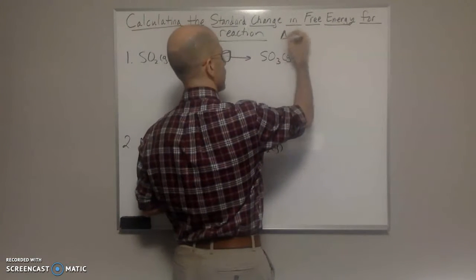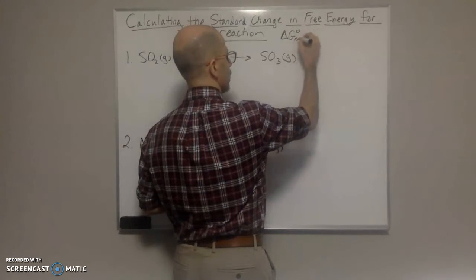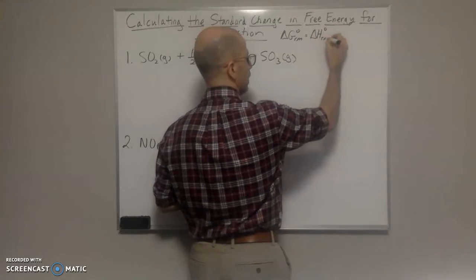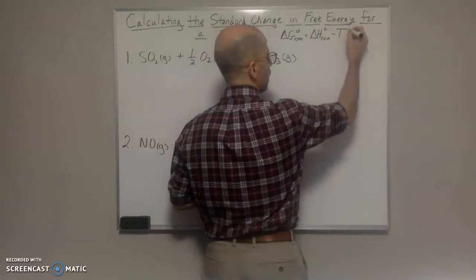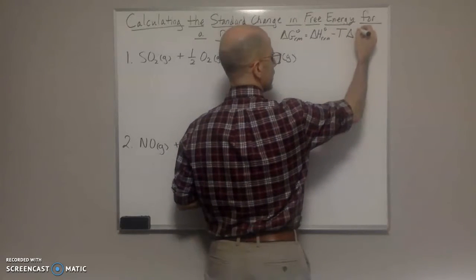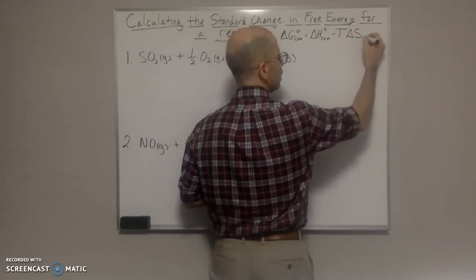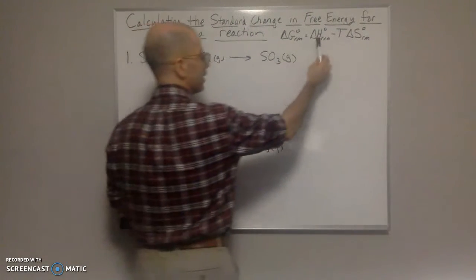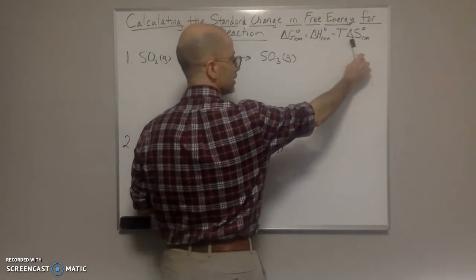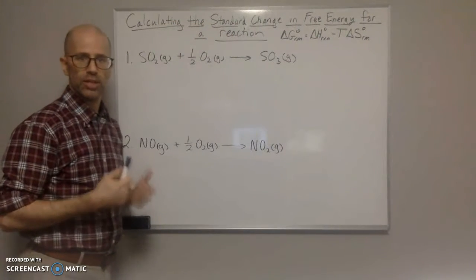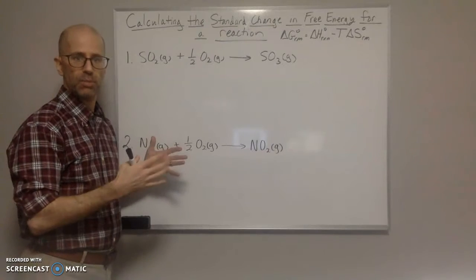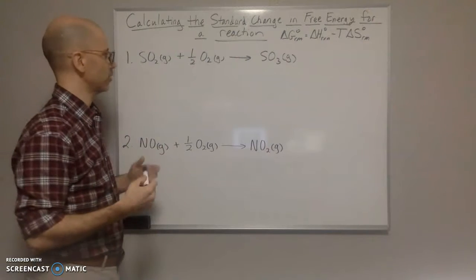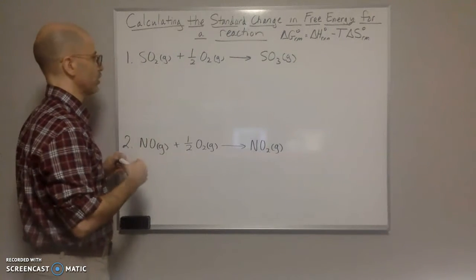The standard Gibbs free energy of a reaction is equal to the standard enthalpy of the reaction minus the temperature in Kelvin multiplied by the standard entropy of the reaction. To find the standard enthalpy and standard entropy of the reaction, you can use the equations of the sum of the products minus the sum of the reactants, which gives you delta H or delta S.